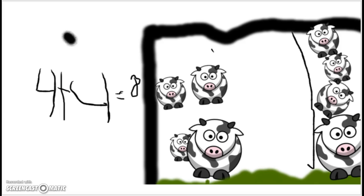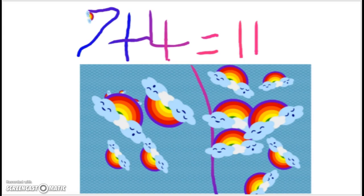I had four cows in my barn and I had four more joined. How many are altogether? Four plus four equals eight cows. I saw seven rainbows today and I saw four yesterday.